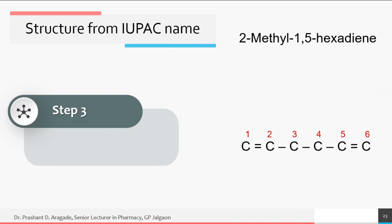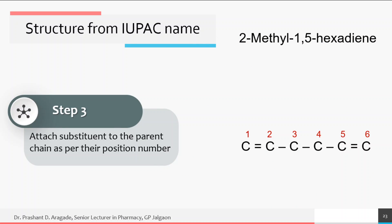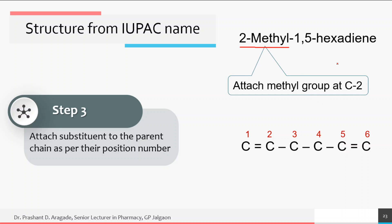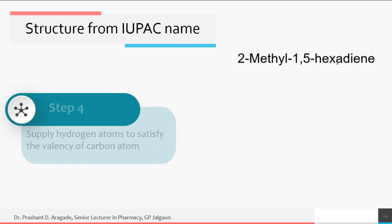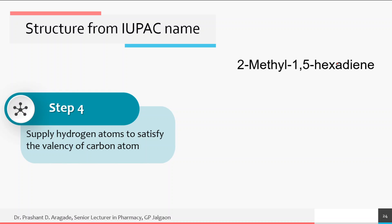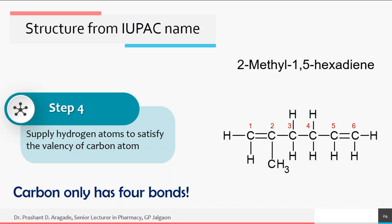Step three: attach substituents to the parent chain as per their position numbers. Here '2-methyl' is the substituent, so attach a methyl group at C2. Step four, the most important step: supply the correct number of hydrogen atoms to satisfy the valency of each carbon atom. Always remember that carbon has four bonds to complete its octet, so add hydrogen atoms to each carbon atom in the chain accordingly.